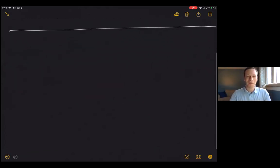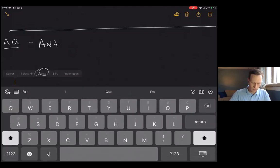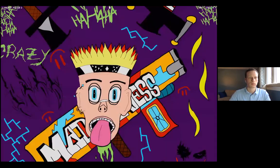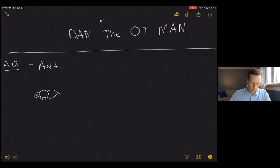All right guys, so the first letter we're doing is the letter A. What does everybody know for A? We could do ant. So A is going to be ant. We're going to do a lowercase a, then make a little circle for his body, a little tail over here, give it an eye, some legs — ants got to walk — and then give it some ears. And there you go, that's your ant right there.